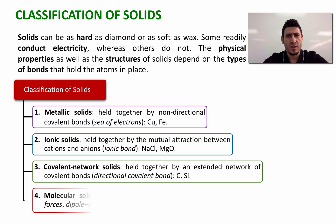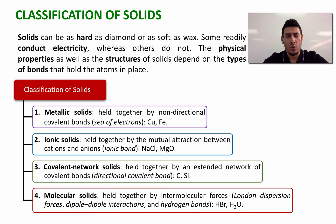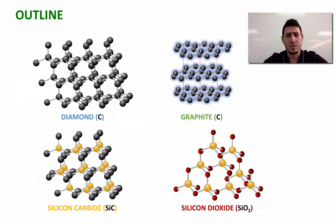The last type of solids is molecular solids, where molecules are held together by intermolecular interactions such as London dispersion forces, dipole-dipole interactions, and hydrogen bonds. Examples include HBr and H2O. In this video, I'm going to focus on covalent network solids and talk mainly about network solids made from carbon, such as diamond and graphite, or silicon, such as silicon carbide and silicon dioxide.